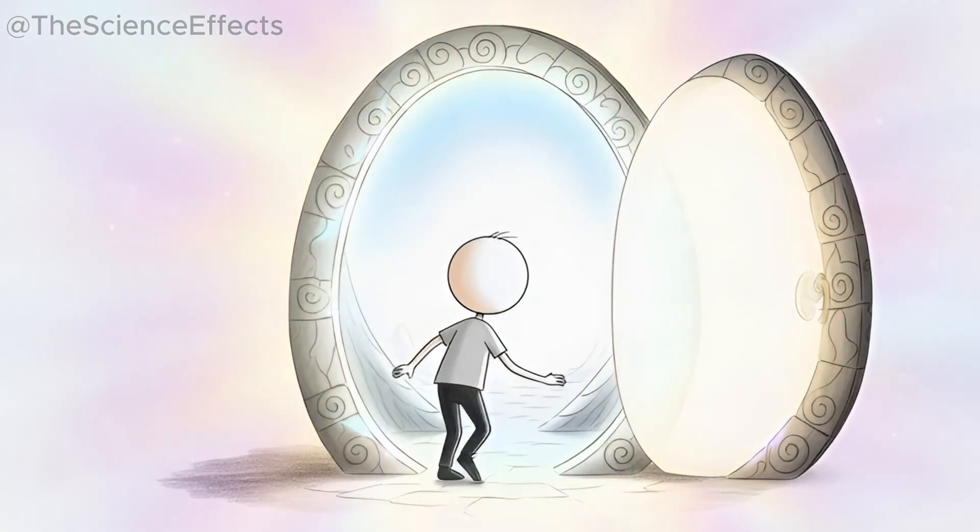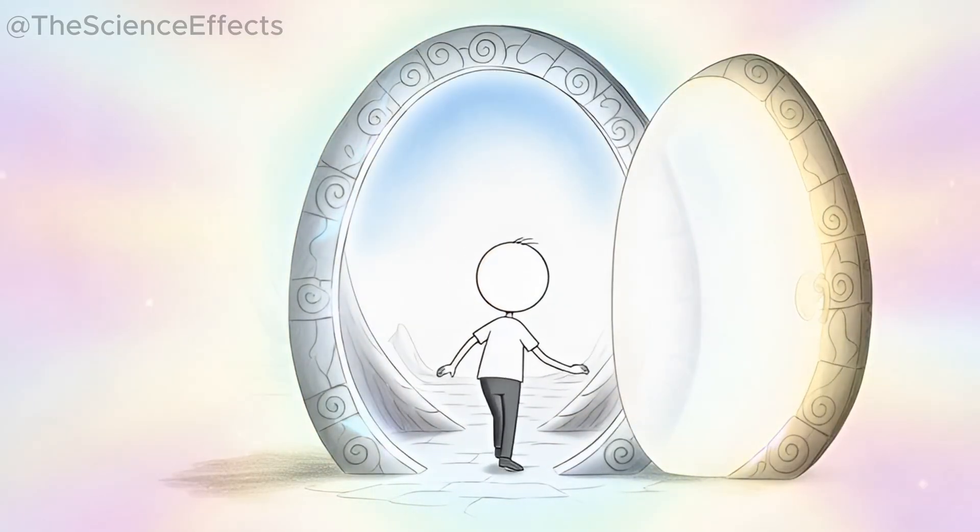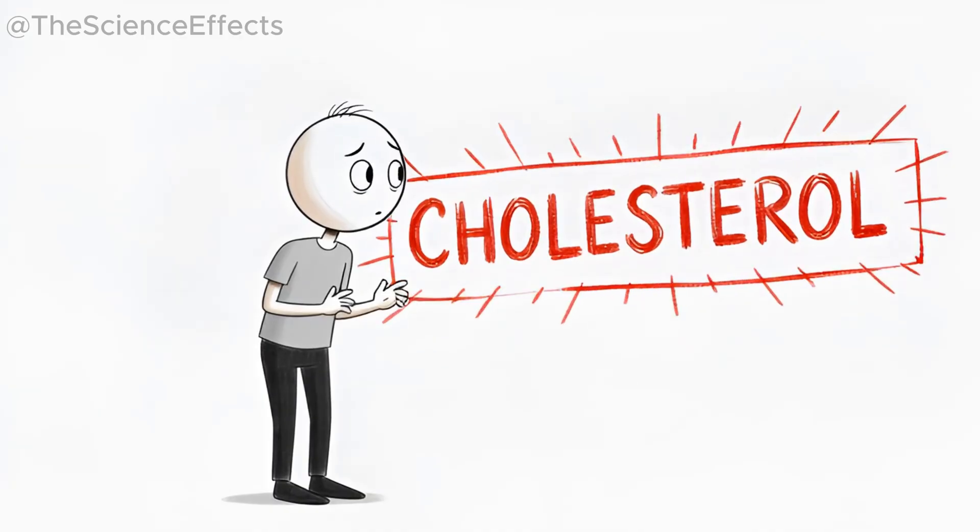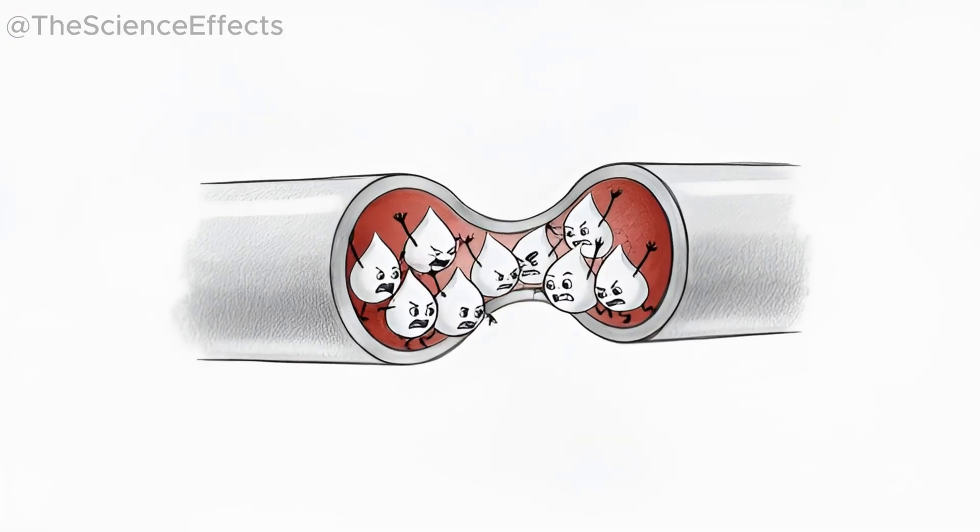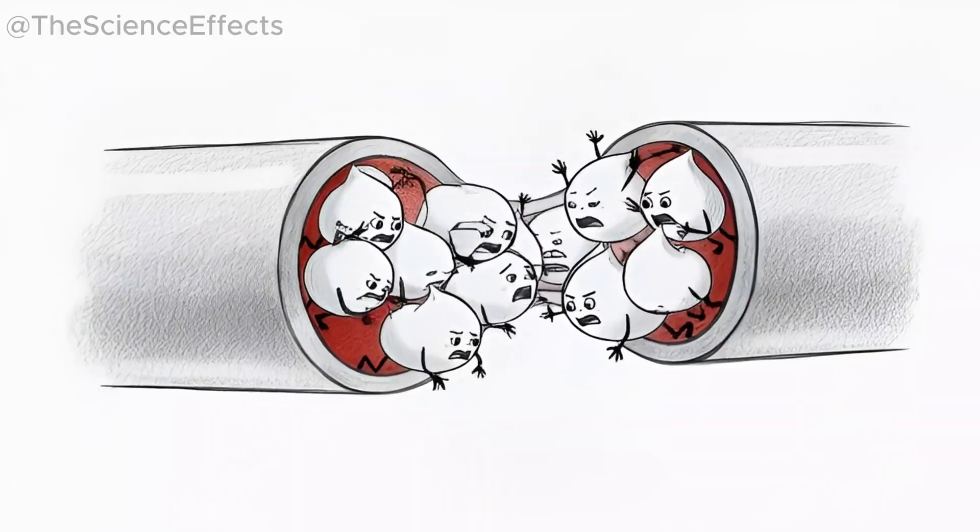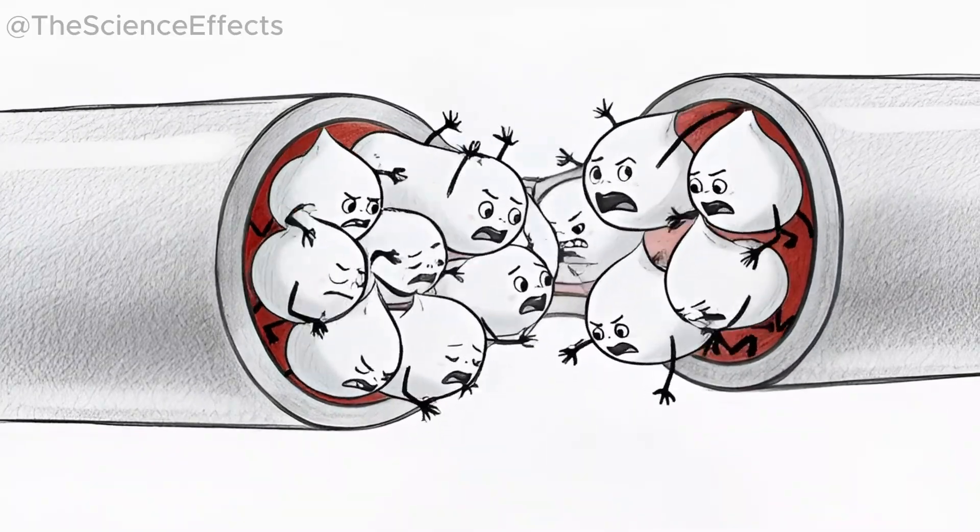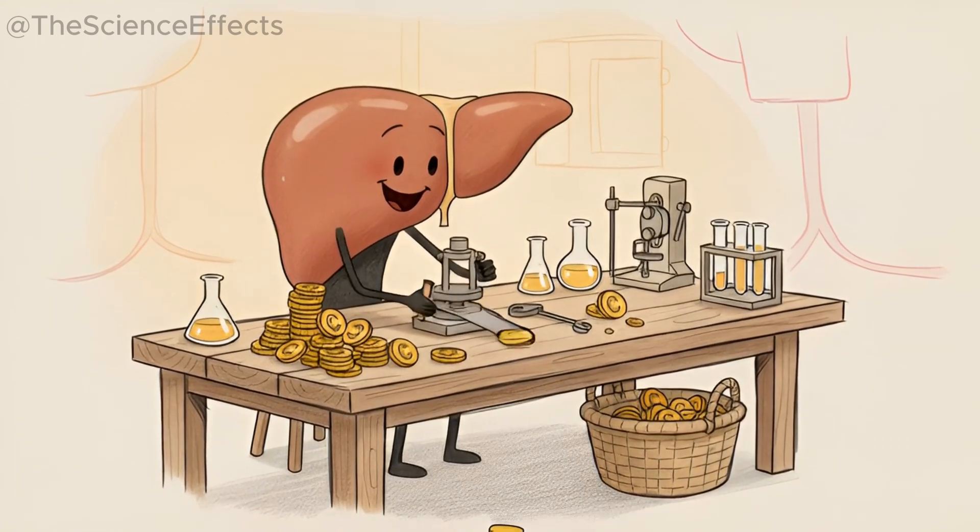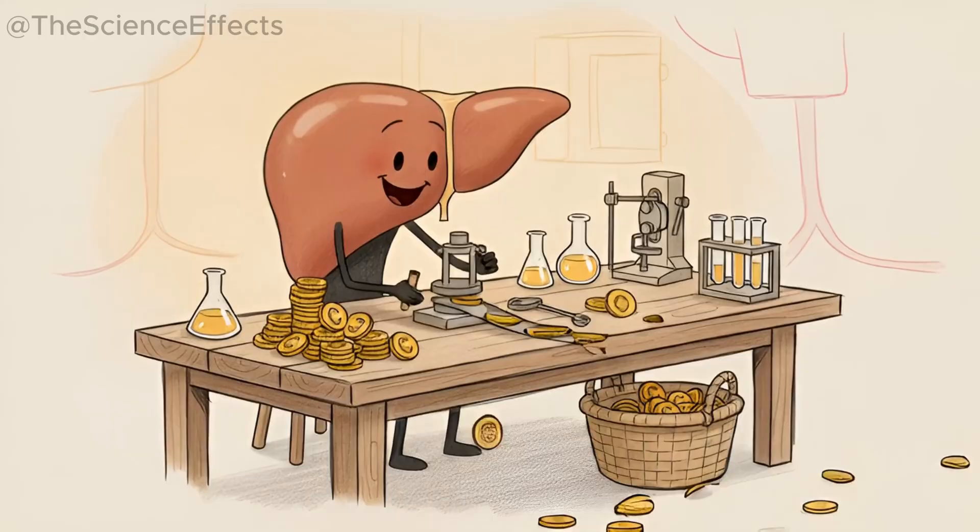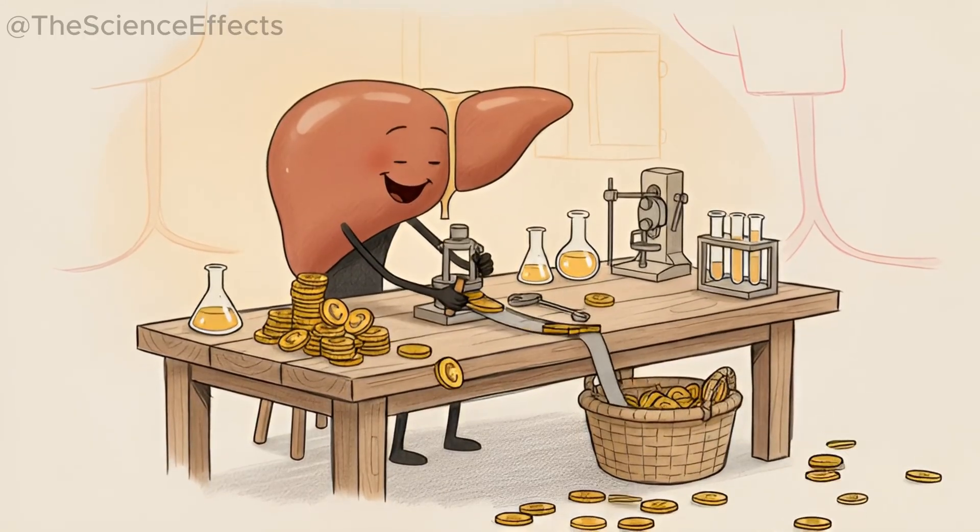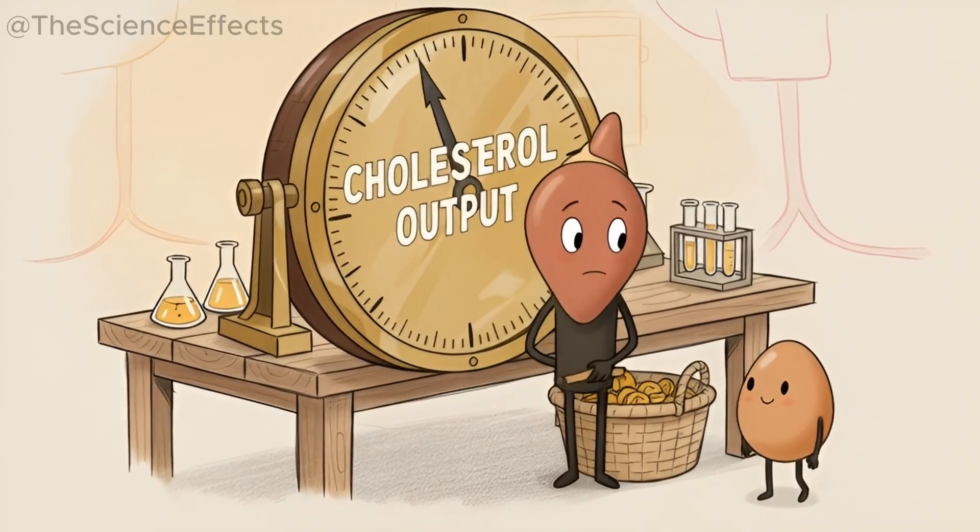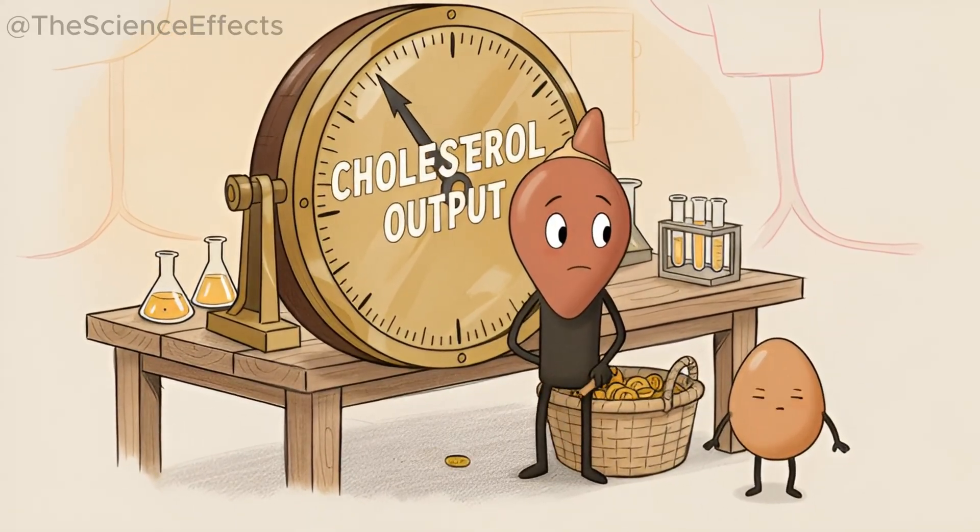Let's start with the myth: cholesterol. The word alone feels like a red alarm. We imagine blocked pipes, arteries narrowing, silent danger. But here's the twist: your liver makes cholesterol constantly because your body needs it. It's essential for hormones, cell membranes, vitamin D, and brain function. And when you eat eggs, your liver reduces its own cholesterol production to keep balance.